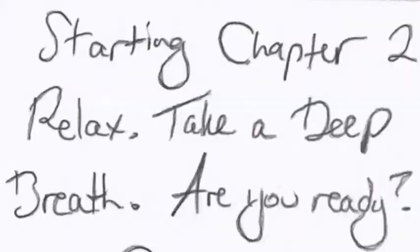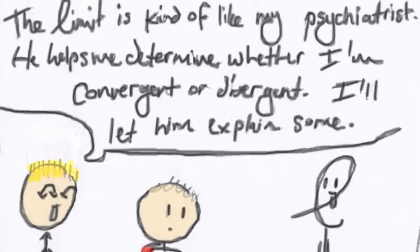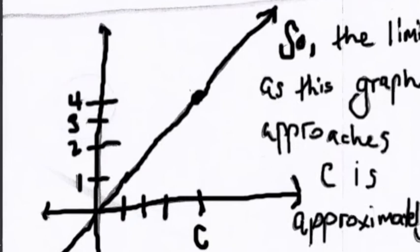Starting Chapter 2. Take a deep breath. Relax. Are you ready? Now let me introduce you to one of my good friends, The Limit. Hey, Lineman, what's up? The Limit is kind of like my psychiatrist. He helps me determine whether I'm convergent or divergent. I'll let him explain some. Exactly, Lineman. I hope you know that Limit of f of x is x goes to c equals l, l being a number. So the limit as this graph approaches c is approximately...